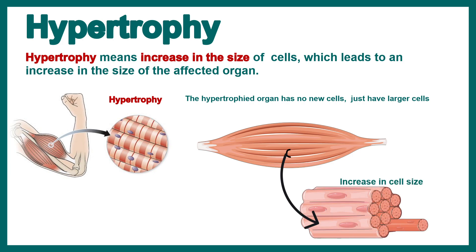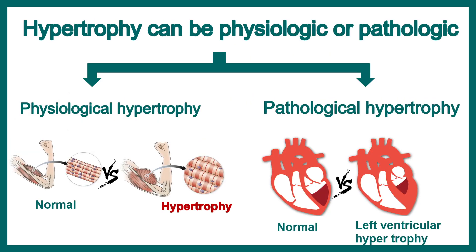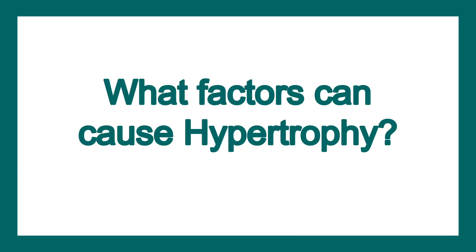Just like hyperplasia, hypertrophy has two categories: physiological and pathological. For example, there is increased left ventricular hypertrophy when there is hemodynamic overload, and muscle hypertrophy is natural — it happens when you lift barbells and dumbbells in a gym or do extensive physical work.